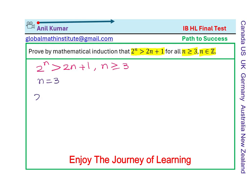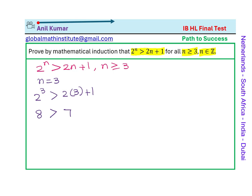So if I put n equals to 3, I get 2 to the power of 3 which should be greater than 2 times 3 plus 1. Now 2 to the power of 3 as you know is 8 and 2 times 3 is 6 plus 1 is 7 and we know 8 is indeed greater than 7. So that statement is true. So we have established that this statement works for the very first initial point n equals to 3.